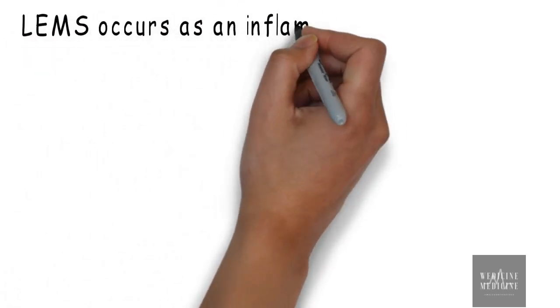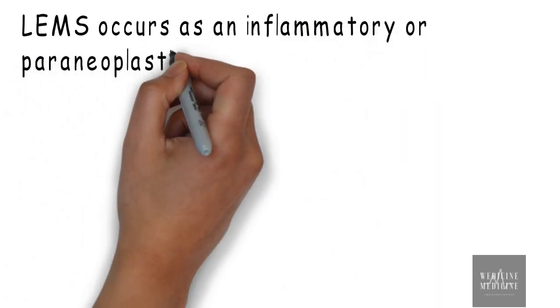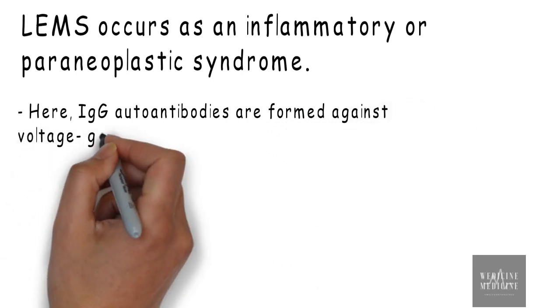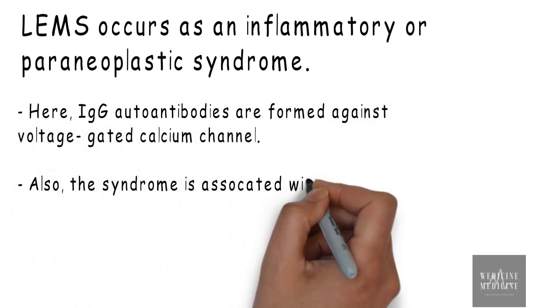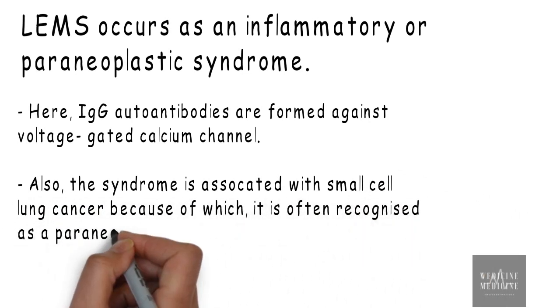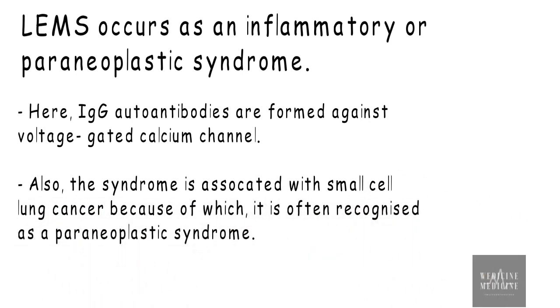Lambert-Eaton syndrome occurs as an inflammatory or paraneoplastic syndrome. Immunoglobulin G auto-antibodies are formed against voltage-gated calcium channel. Also, the syndrome is associated with small cell lung cancer, because of which it is often recognized as a paraneoplastic syndrome.